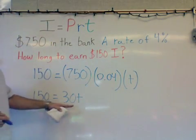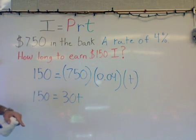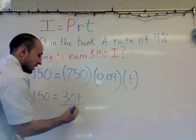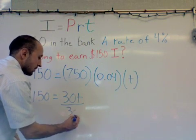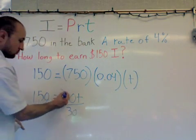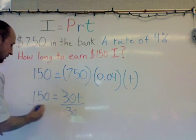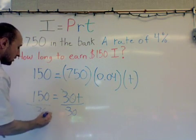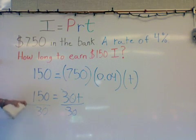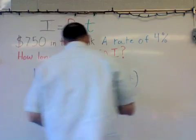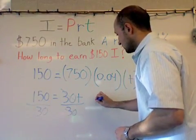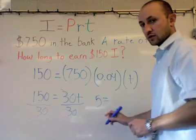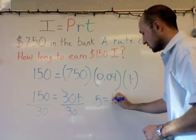Now since we're solving for T, we need to get it by itself. The way we do that is by dividing. Divide by 30 on both sides. Both of the 30s go away. Divide by 30 over here. Remember, 150 divided by 30 is 5, because 30 goes into 150 five times. So now I've figured out that 5 is equal to T.